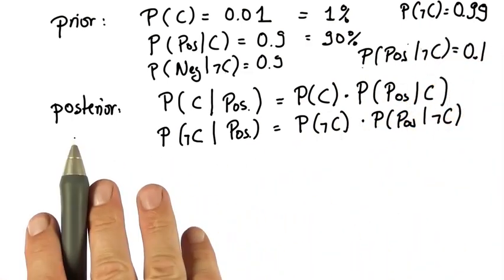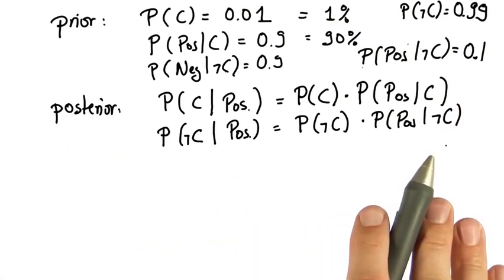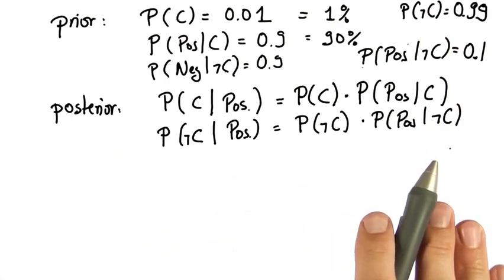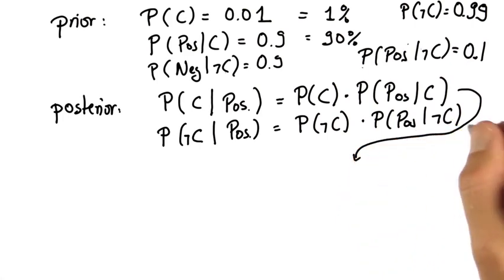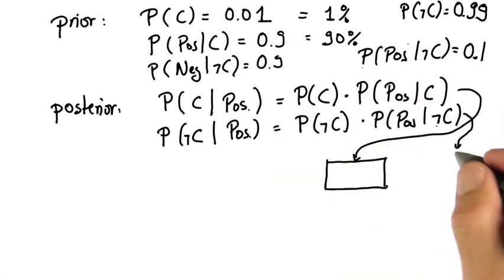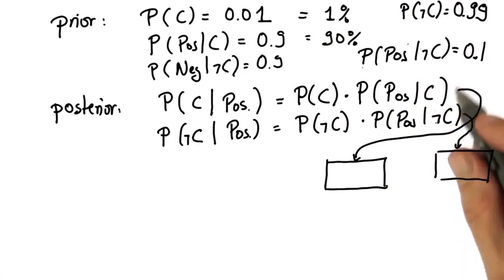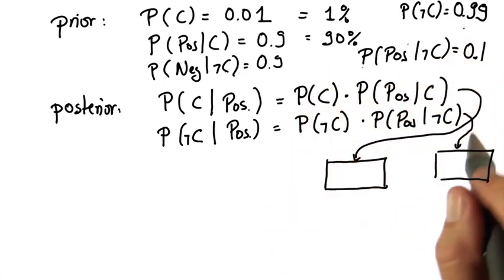Now what's interesting is that this is about the correct equation except the probabilities don't add up to 1. I'm going to ask you to compute those. So please give me the exact numbers for the first expression and the second expression written over here using our example up there.